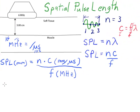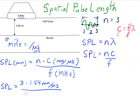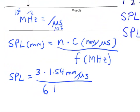Let's look at the calculation. For spatial pulse length, I'll use three full wavelengths in the pulse. The speed of sound in soft tissue is 1.54 millimeters per microsecond. And the frequency, in this case the frequency of the transducer, we'll just use six megahertz.